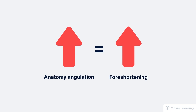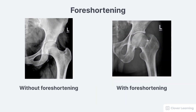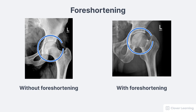Foreshortening can be avoided through patient positioning. For example, we invert the toes during hip imaging, which causes rotation of the femur and brings the femoral neck parallel to the image receptor. By positioning the patient in this way, we avoid foreshortening of the femoral neck.